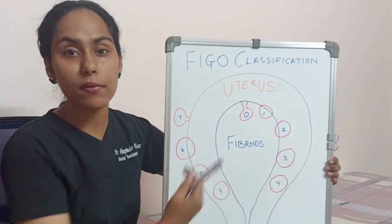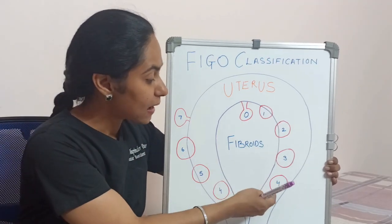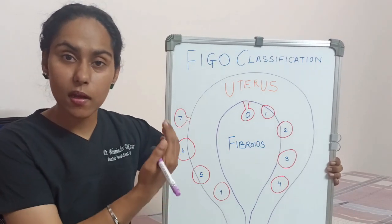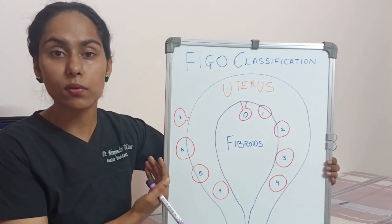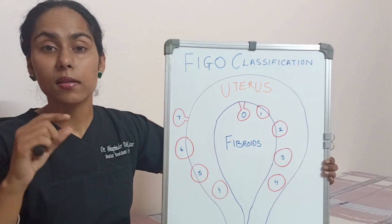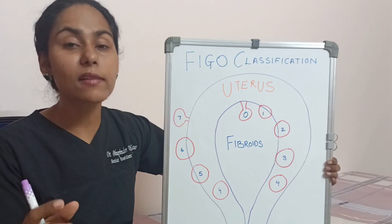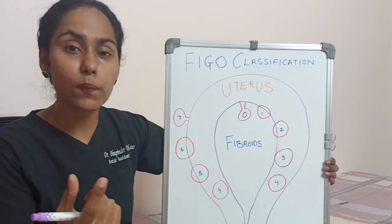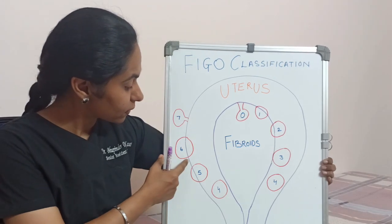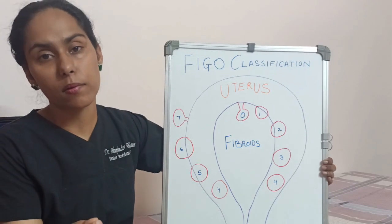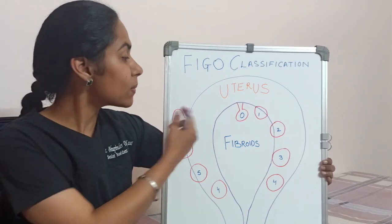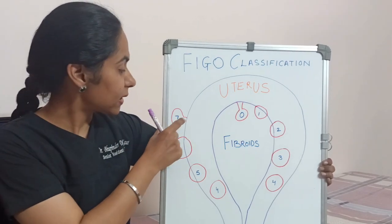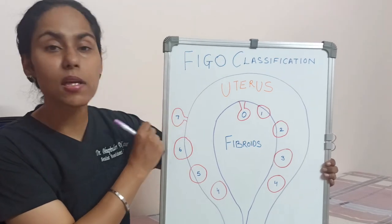Those types were all towards the cavity, so we call them submucosal, with type 4 being intramural. Now going outwards, we have type 5, which is a subserosal fibroid going towards the serosal layer of the uterus, with more than 50 percent intramural component. Then type 6, also subserosal but with less than 50 percent intramural component. Type 7 is similar to type 0 — a pedunculated fibroid but on the surface of the uterus, with a stalk connecting it to the uterus and totally subserosal.